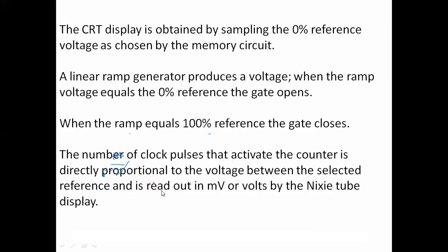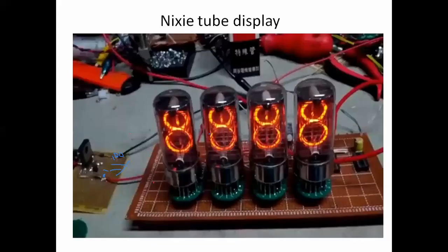By the opening and closing of the gate, clock pulses are produced, and the number of clock pulses is directly proportional to the voltage between the two reference points — giving the value of the voltage between the two reference points. The result is read out in millivolts or volts using the Nixie tube, which displays values similar to a seven-segment display.